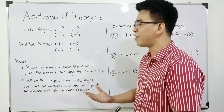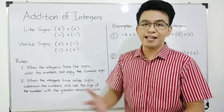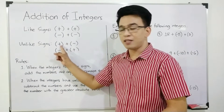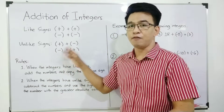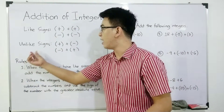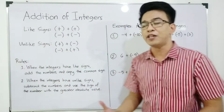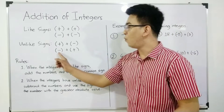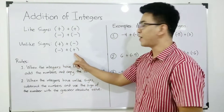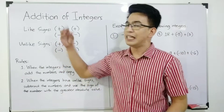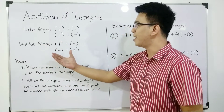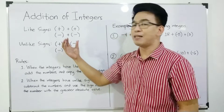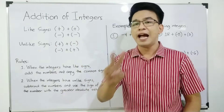Another set of signs meron tayo ay tiyatawag natin unlike signs. We have positive plus negative — one is positive, one is negative. They have different signs. That's why they are under unlike signs. Another situation in adding two integers with unlike signs: if one is negative and the other is positive. Ngayon, alam mo na yung like signs at unlike signs natin. Kapag like signs, both positive or both negative. Kapag naman unlike signs, the two integers have different signs.